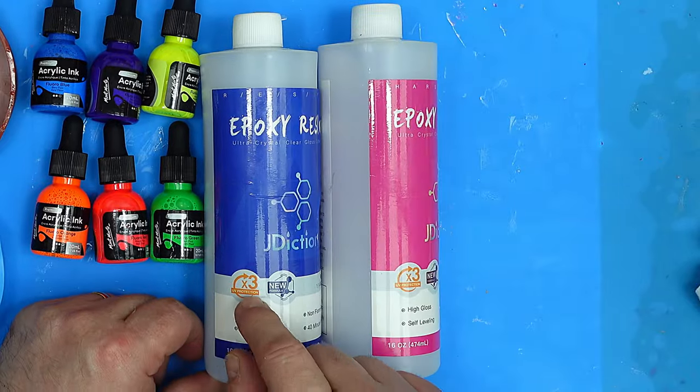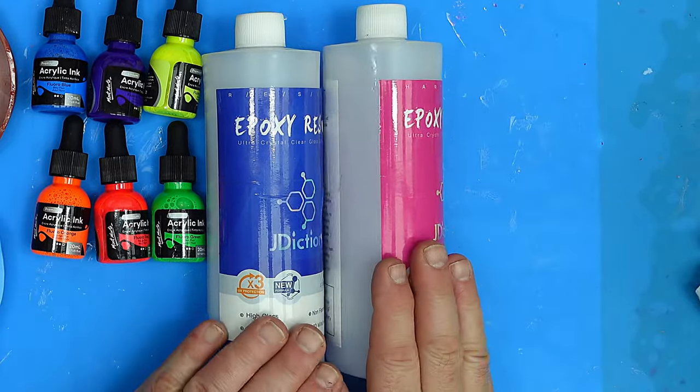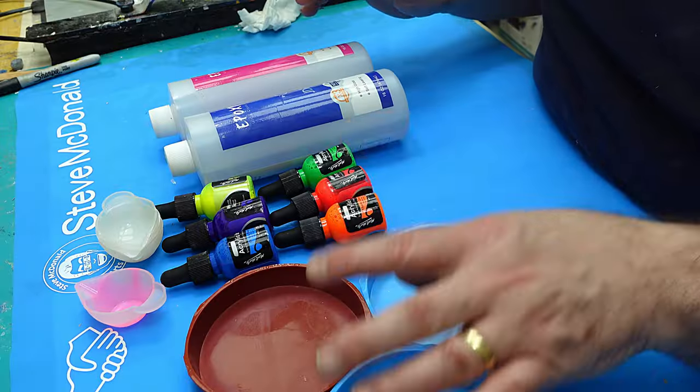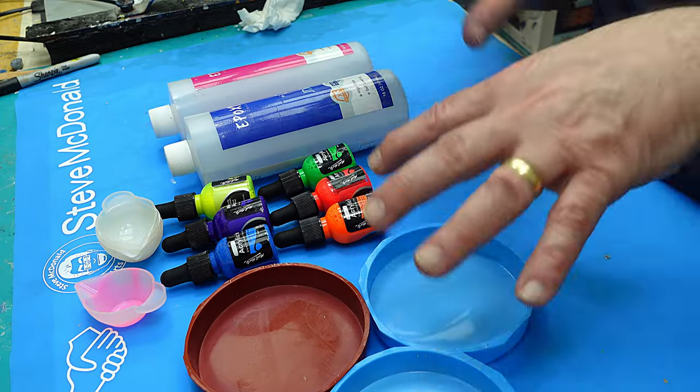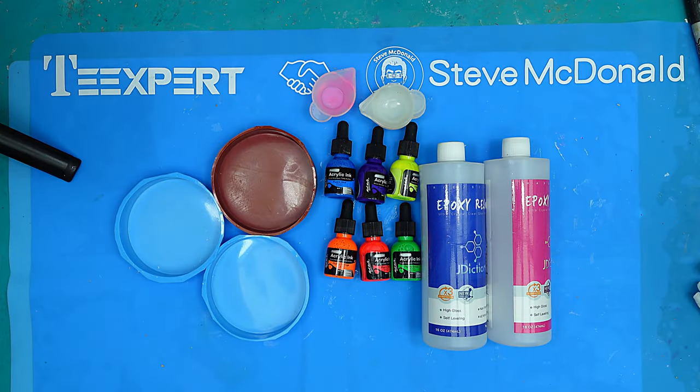I'm using J-Dixon 3x UV protect resin today because it's an ideal consistency, and I'm going to make coasters. You'll have to wait and see what experiments I'm doing, but hopefully it'll work.